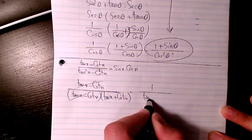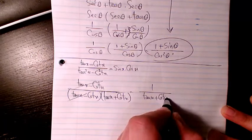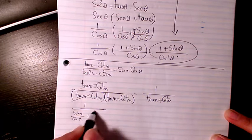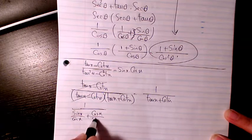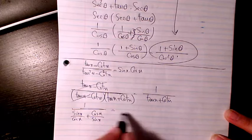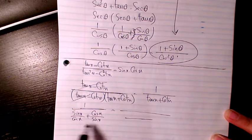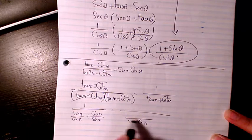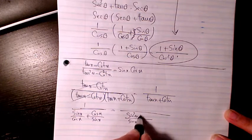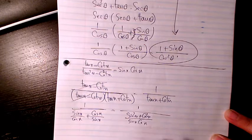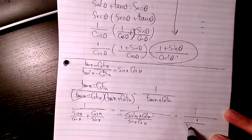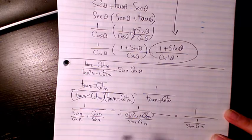So we have one over (sin x / cos x + cos x / sin x). Finding the common denominator inside gives us (sin² x + cos² x) divided by (sin x · cos x). Since sin² x + cos² x equals one, this simplifies to one over (sin x · cos x), which is a denominator inside another denominator.